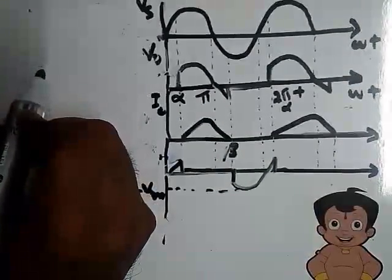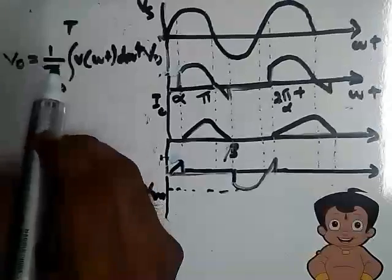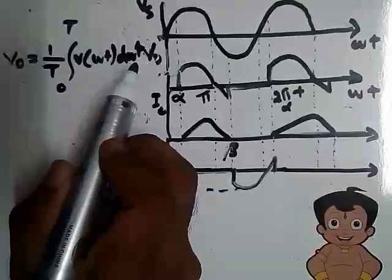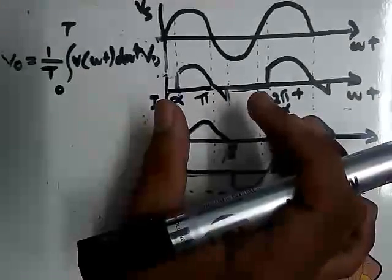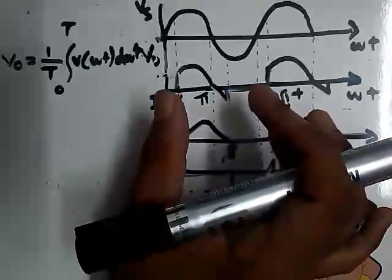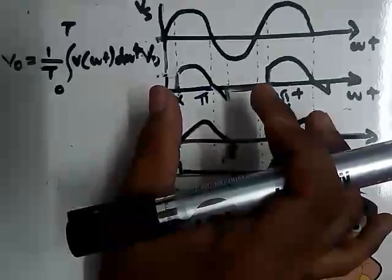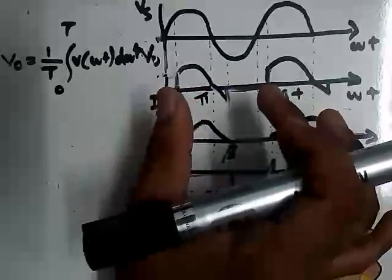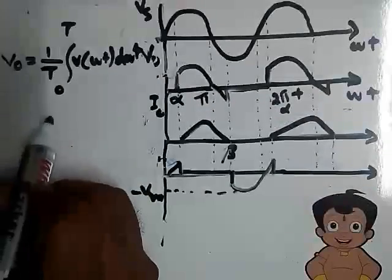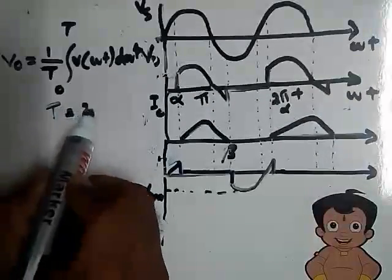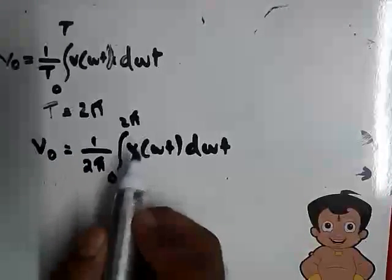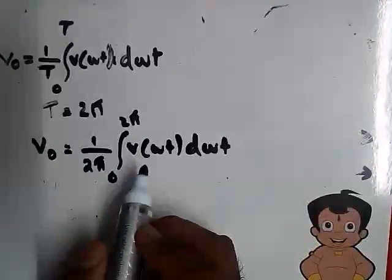Now we have to obtain the average output voltage. The average output voltage is (1/T) × ∫₀ᵀ V(ωt) d(ωt). From this waveform we obtain the time period of the output voltage waveform as 2π — that is, this waveform repeats after each 2π, so T = 2π. So V0 can be written as (1/2π) × ∫₀²π V(ωt) d(ωt).